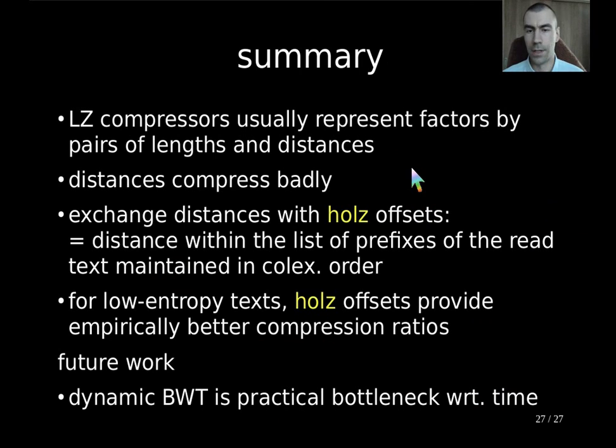So in summary, we know that LZ compressors usually represent factors by pairs of lengths and distances. And in practice, these distances compress badly because their values can be huge. And we propose Holz offsets for exchanging as exchanged with these distances. And such a Holz distance is a distance within the list of prefixes of the read text maintained in colex order. For low entropy texts, Holz offsets provide empirically better compression ratios. And for future work, the main problem is that this dynamic BWT is quite slow, so we want to speed it up and make it more efficient. And that's all. Thanks for listening and any questions are welcome.